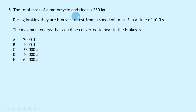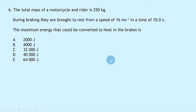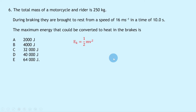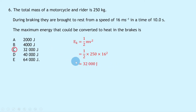Question 6 says the total mass of a motorcycle and rider is 250 kg. During braking they're brought to rest from 16 m/s in 10.0 seconds. The maximum energy converted to heat in the brakes is? Since they're brought to rest, all kinetic energy is converted to heat. Ek = ½mv² = ½ × 250 × 16² = 32,000 joules, giving answer C. Note we didn't need the 10 seconds — that was just a distractor.